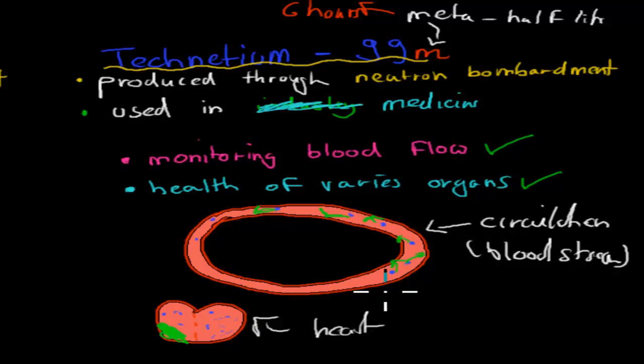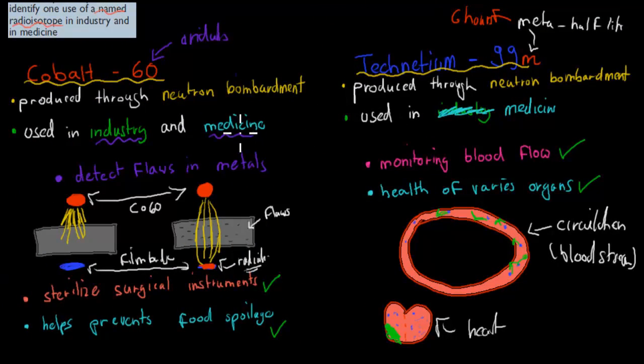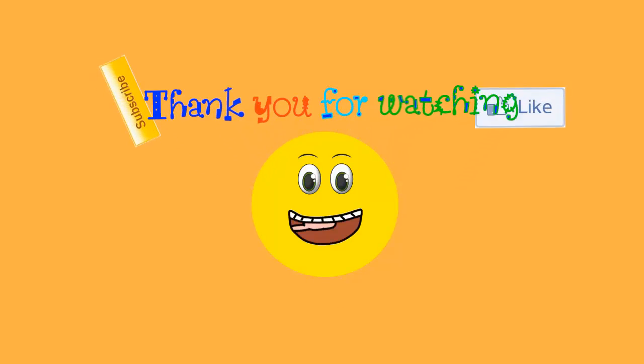That's an example. That's the example of how we can use it to see how our organs are doing and how our circulation is doing. That's that was technetium-99. So I hope that was useful. Yeah, for this dot point, all you need to know is the named uses, the named radioisotopes and their uses. So cobalt-60, detect flaws in metals, sterilized surgical equipment, and helped prevent food spoilage. And technetium-99 was to help monitor blood flow or to see how blood flows, if it's all going good, and also the health of various organs as well. So I hope that was useful. Thank you for watching.